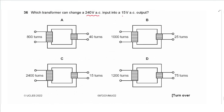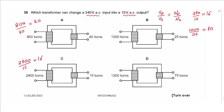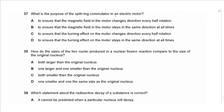Question 36: which transformer converts 240 V AC to 15 V AC? Using Vp/Vs = Np/Ns: 240/15 = 16. Checking the turn ratios: 800/40 = 20; 1000/25 = 40; 2400/15 = 160; 1200/75 = 16. Only the last option gives a ratio of 16, matching Vp/Vs. The answer is D.